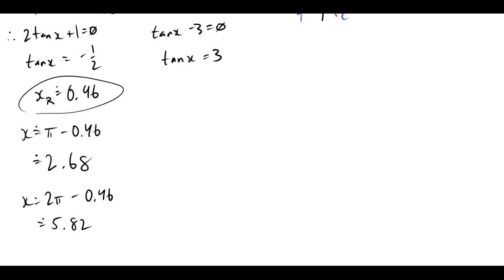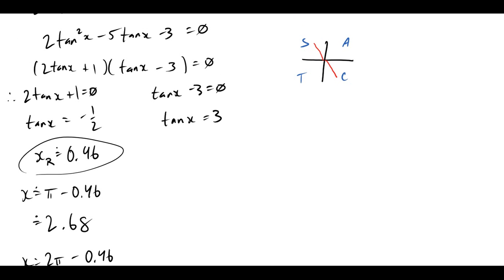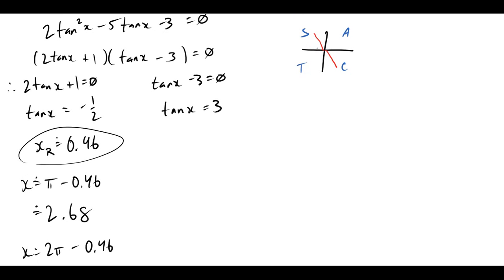And what about the tan of 3? So let's see, shift tan 3, and where is tan positive? Here and here. So one of them is just this answer that I'm looking at, 1.25 rounded, or x would be approximately π plus 1.25, which works out to 4.39.